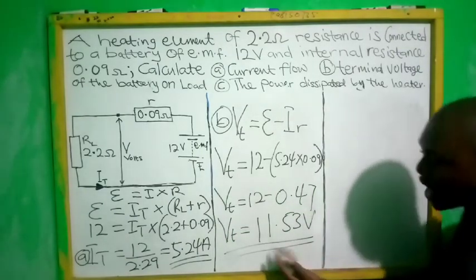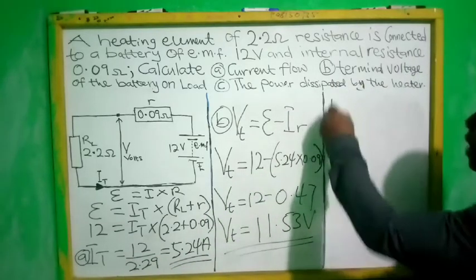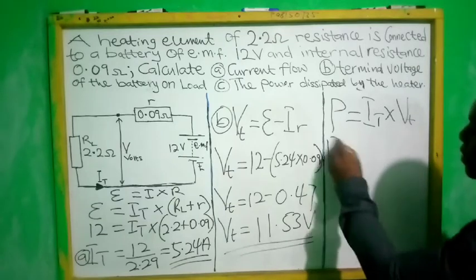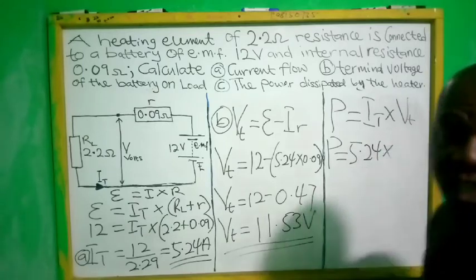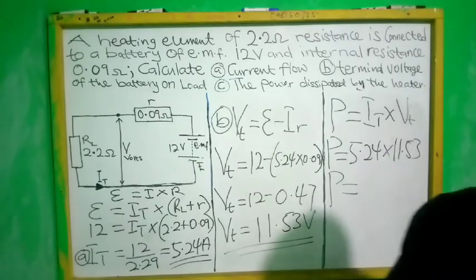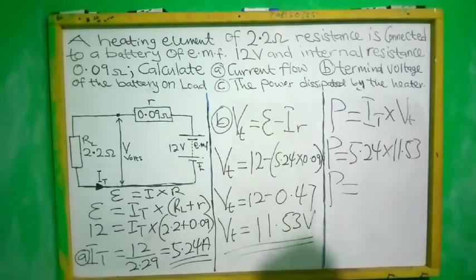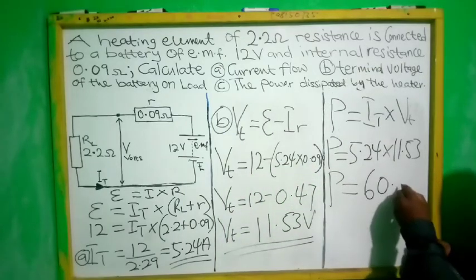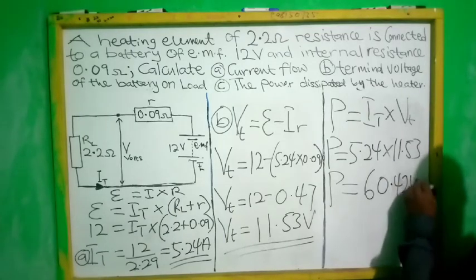For part (c), power is equal to total current times terminal voltage. Power = 5.24 × 11.53. Calculating this gives 60.42 watts. So the power dissipated by the heater is 60.42 W.